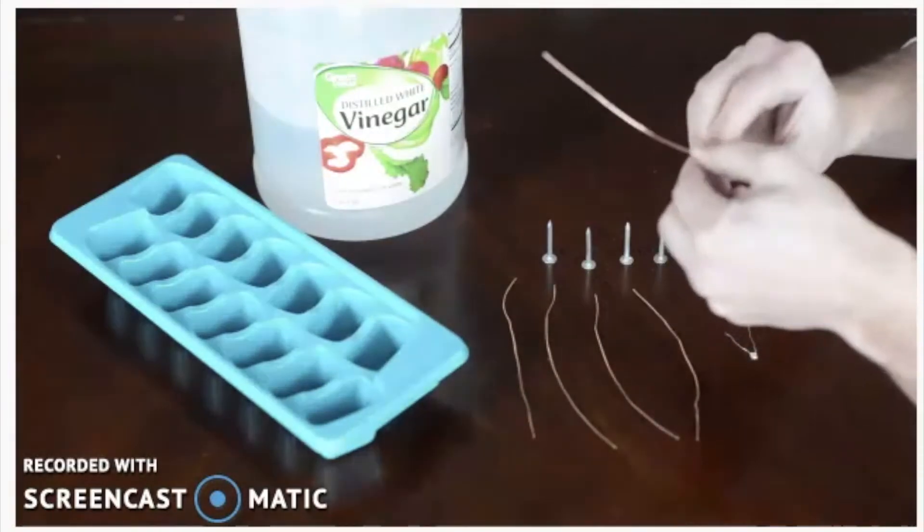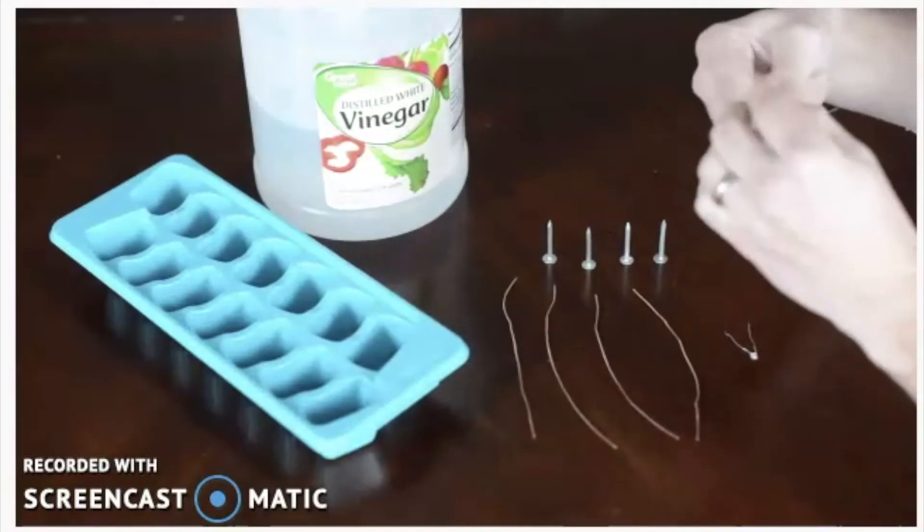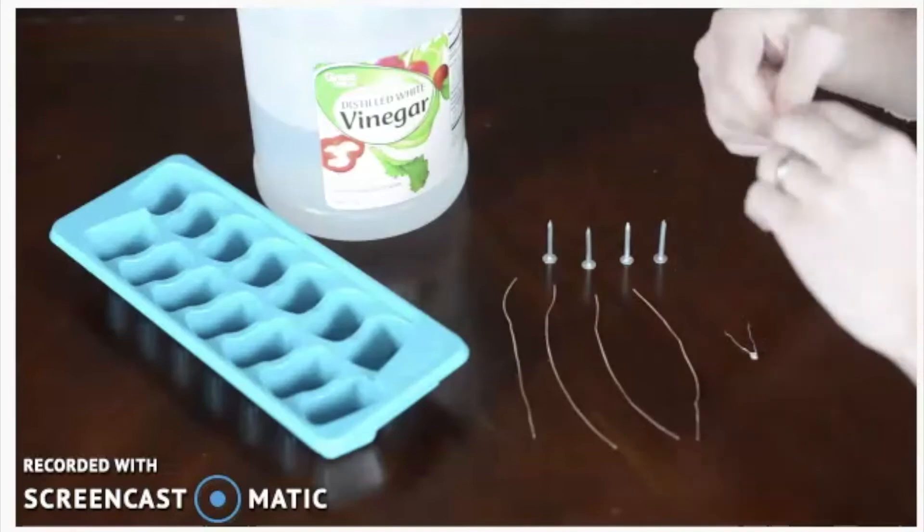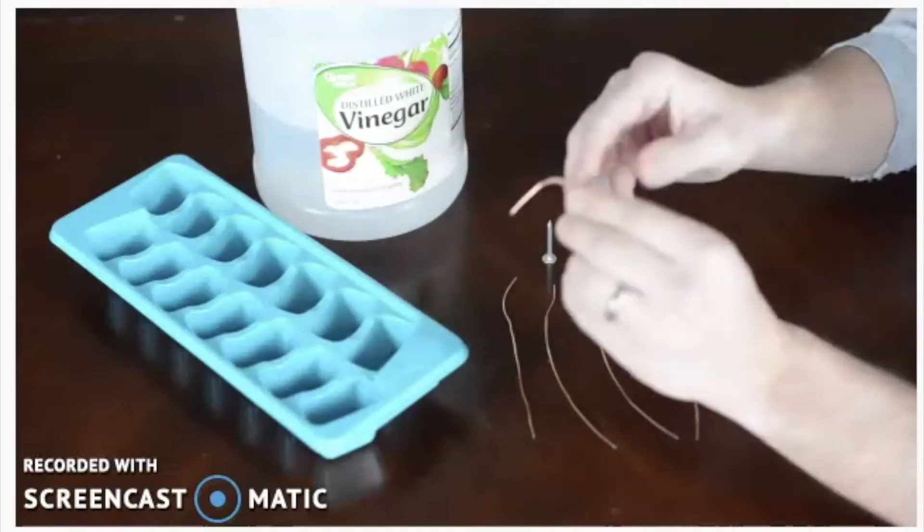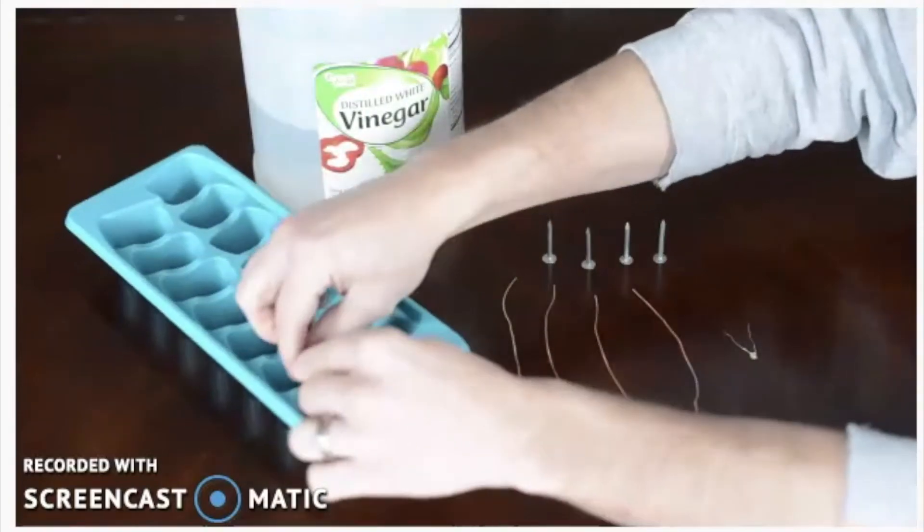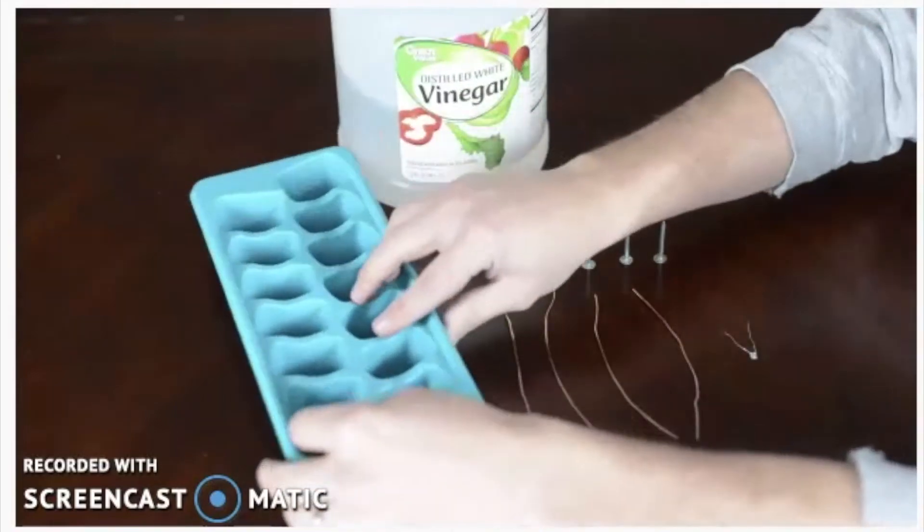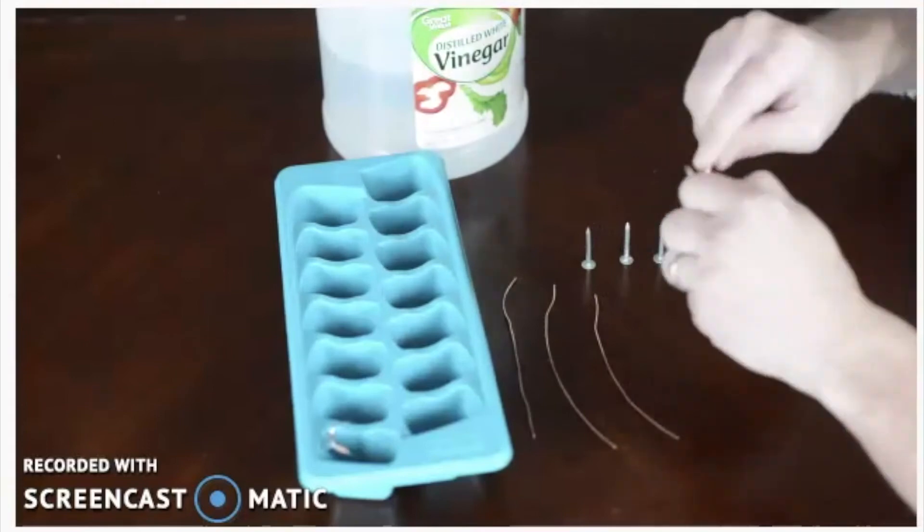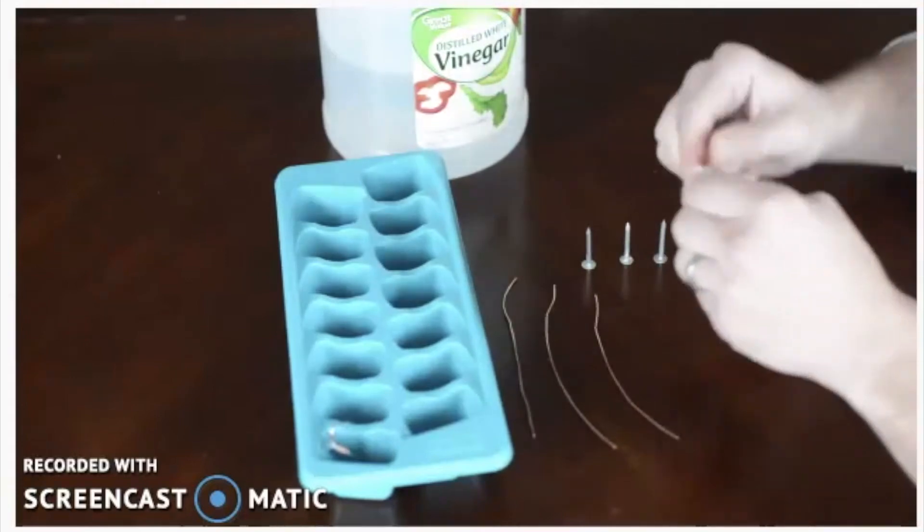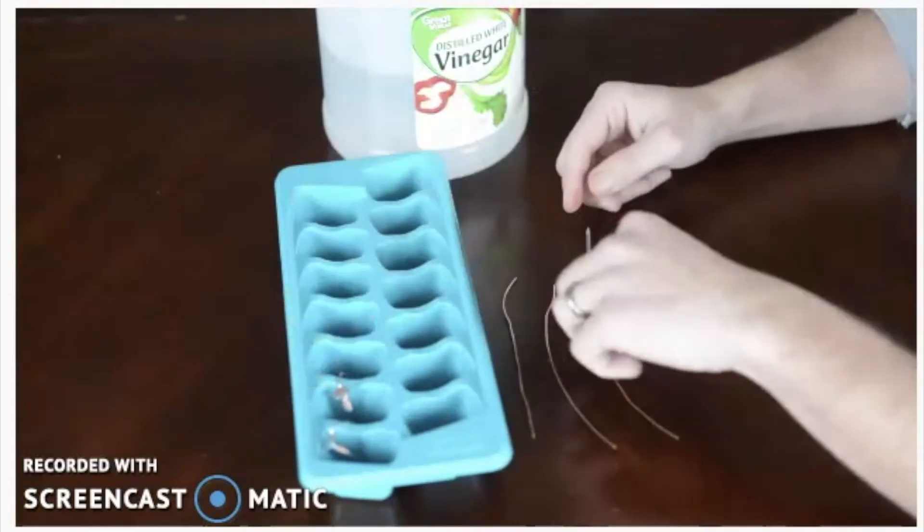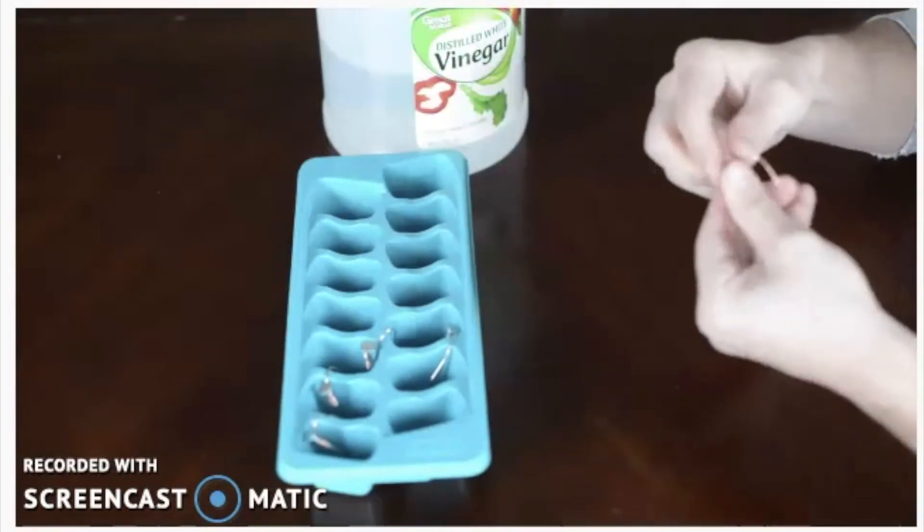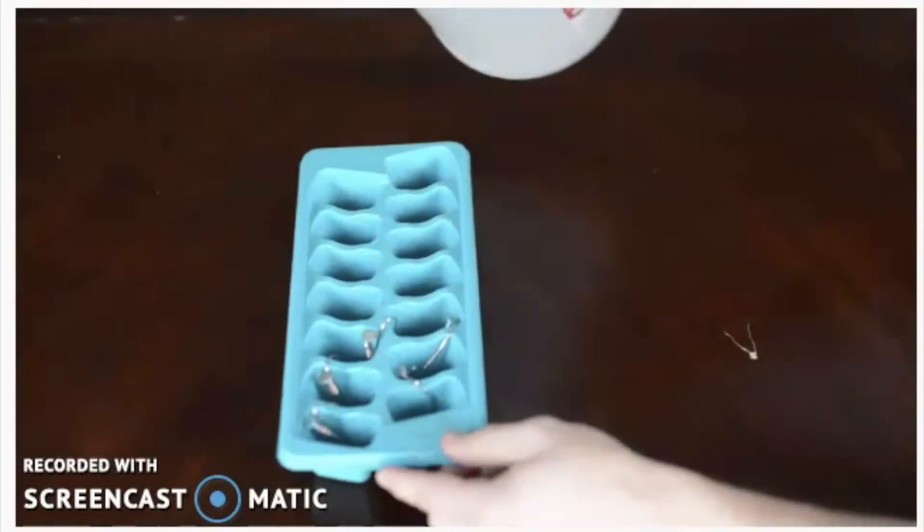Then you're going to take your copper wire and wrap it around your nail, and you want to leave kind of a tail, a little bit of copper wire out. When you put it in the ice cube tray, you want that little tail end of the copper wire to go into the next well of the ice cube tray. So once you have all of that, you just keep doing that.